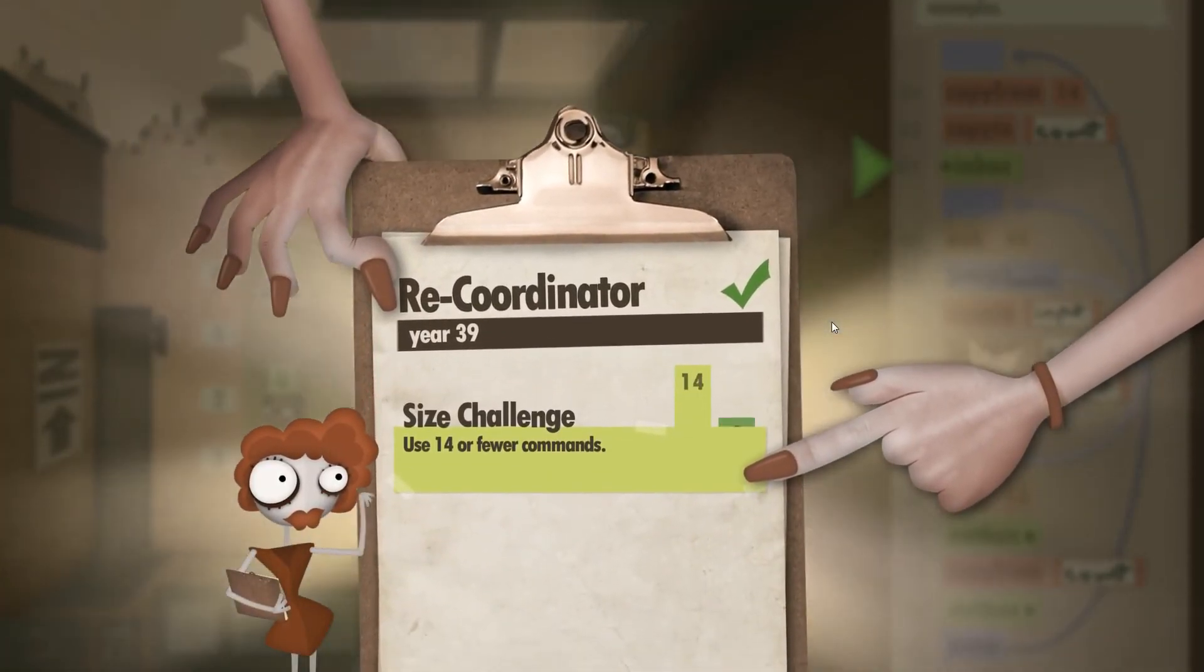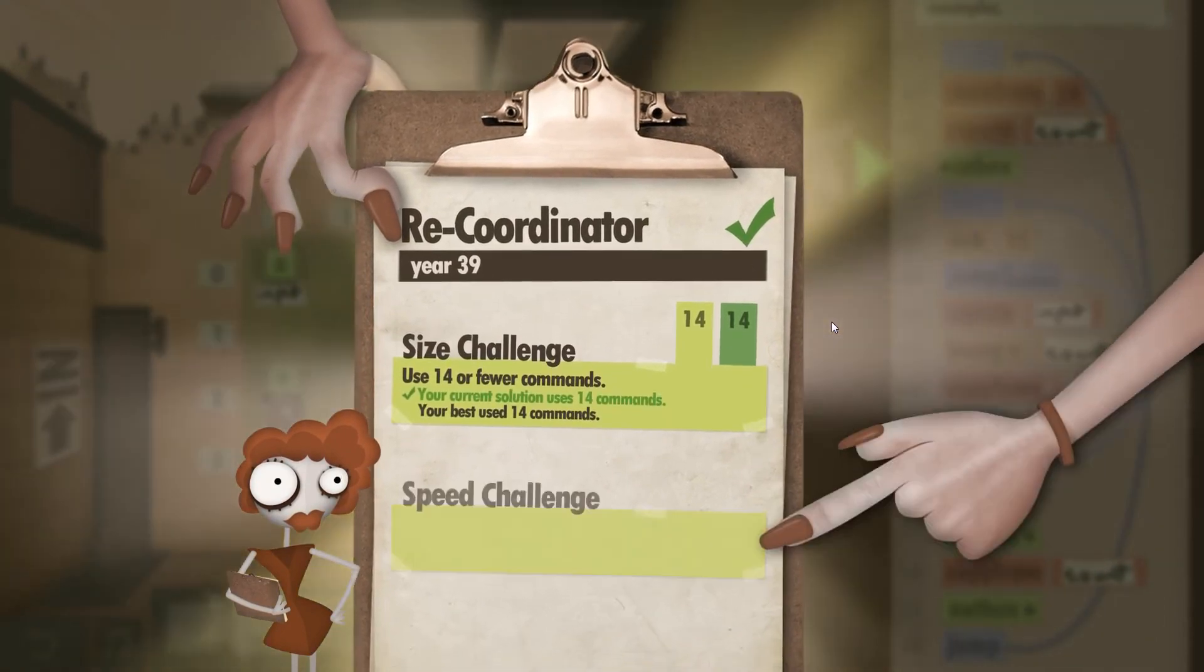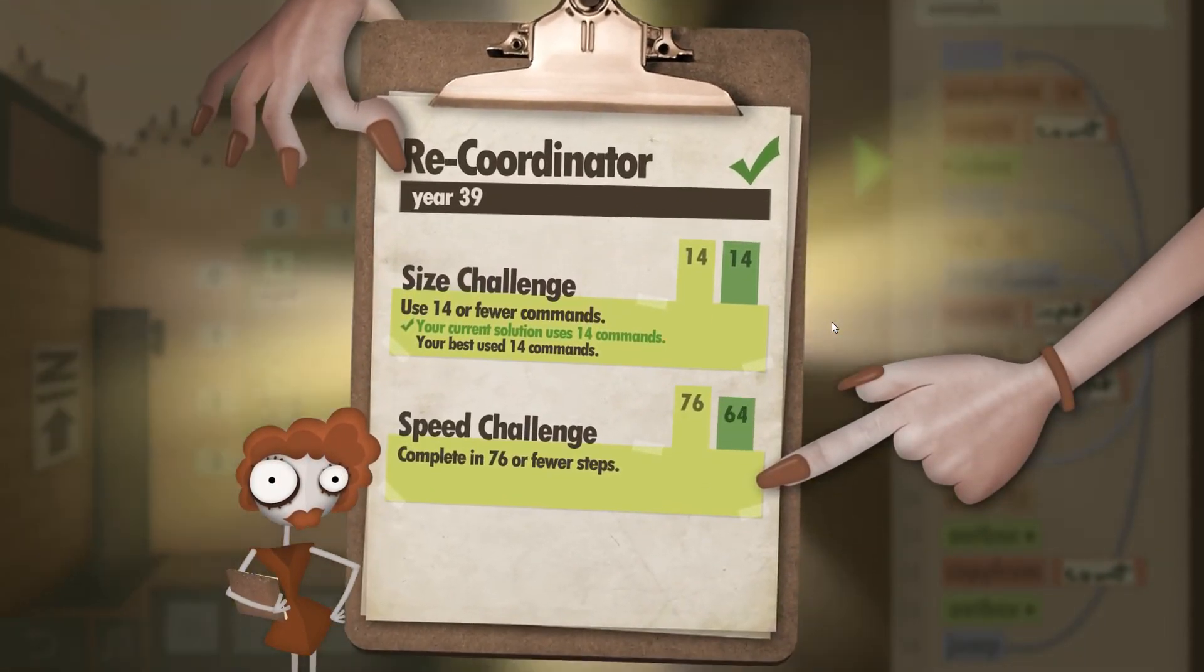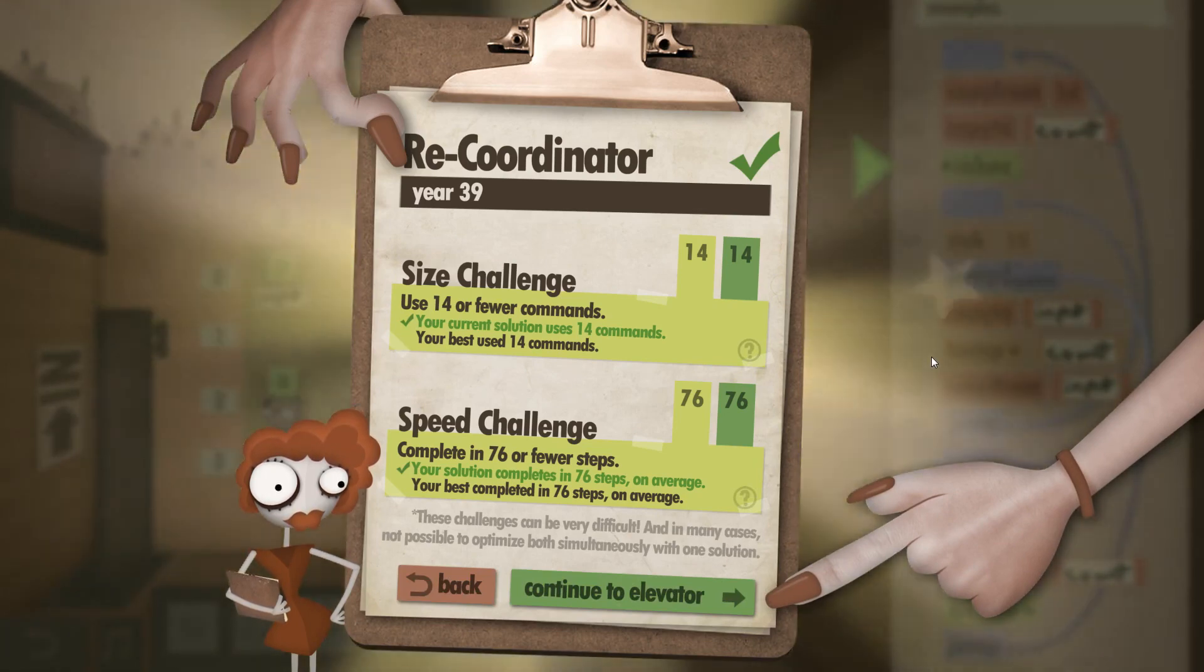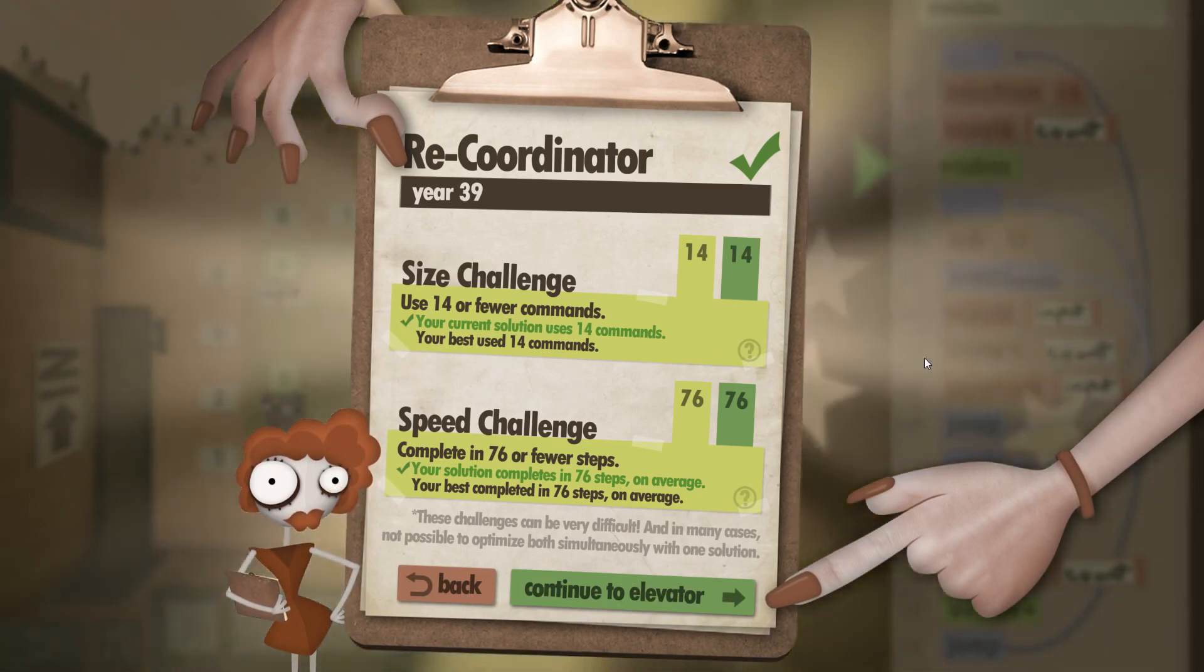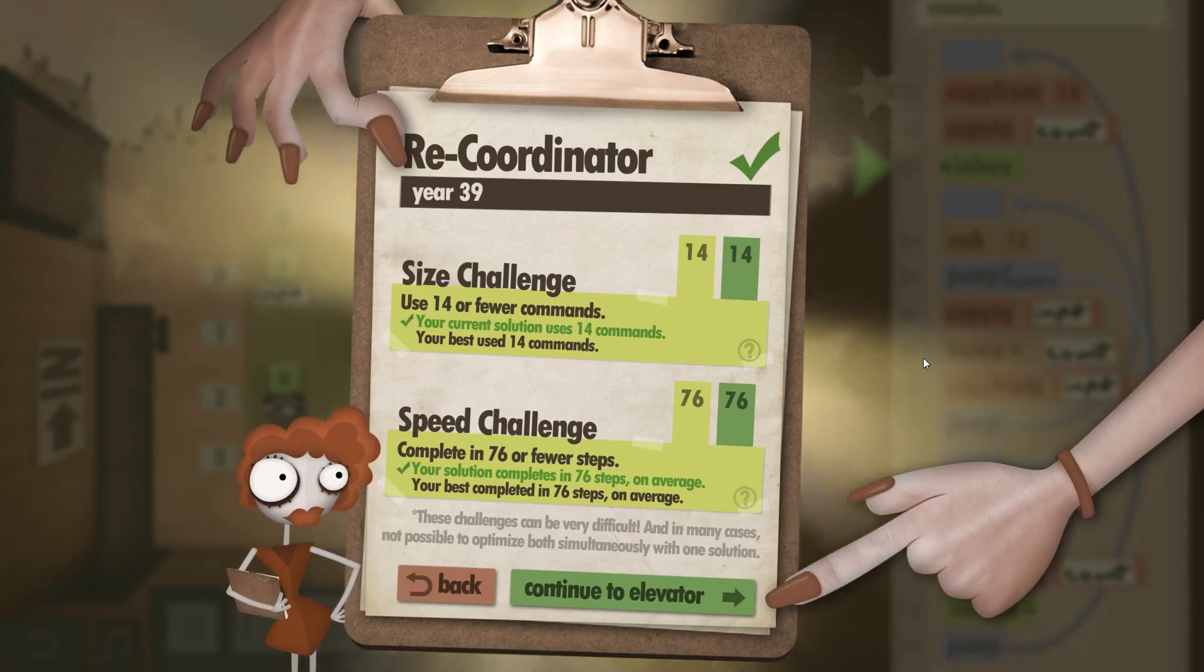There we go. 14 of 14 steps. And exactly 76 out of 76 for the speed challenge. And that's the re-coordinator, year 39. See you next time.